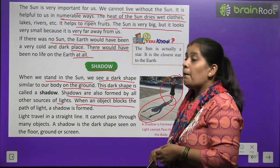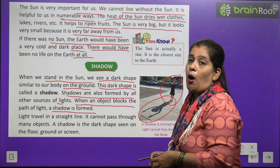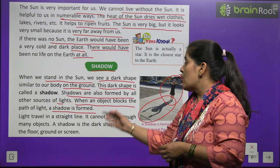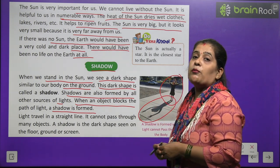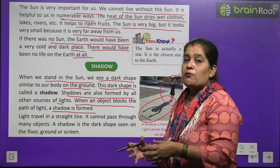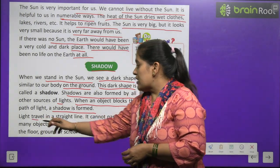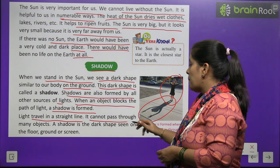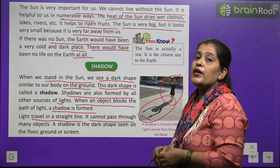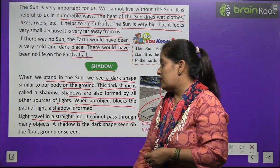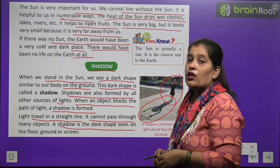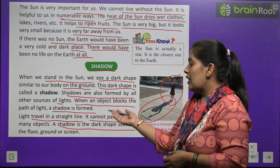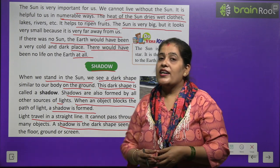When an object blocks the path of light, a shadow is formed. Agar koi object roshni ko block karega, rokega, toh us object ki shadow ban jayegi. Light travels in a straight line — roshni seedhi disha mein chalti hai. It cannot pass through many objects — woh kisi bhi object se aar paar nahi ho sakti. A shadow is the dark shape seen on the floor, ground, or screen.